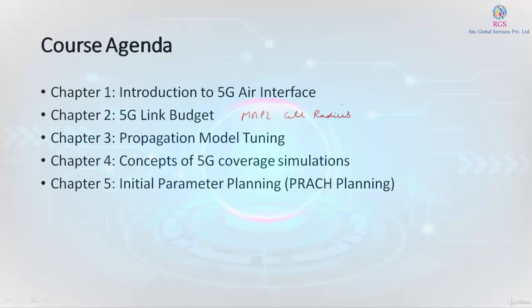We will also learn how a site layout and the number of sites can be calculated from the link budget. We will discuss some important 3GPP propagation models and identify the different types of penetration losses, different types of interference margins, and shadow fading margins. That covers all the key considerations of a link budget in chapter two.